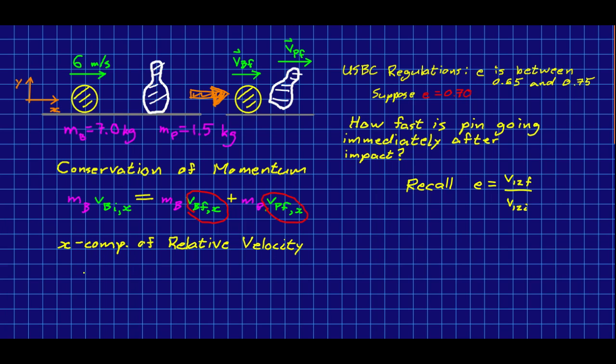First I'm going to write it down the way we had it last time. We would have the relative velocity, say ball, and this is the x component of the relative velocity minus pin, all initial, equals the negative of that same relative velocity component after the collision. This would be what we would use if this collision was elastic but it isn't.